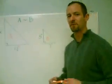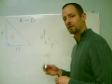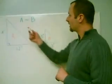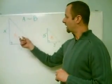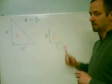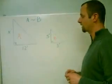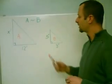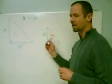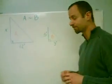Good morning, boys and girls. If you remember, we've been talking recently about similar triangles. We could say that triangle A is similar to triangle B due to the fact that they are both right triangles. And since they are similar triangles, their corresponding sides are in proportion.